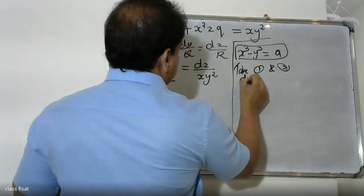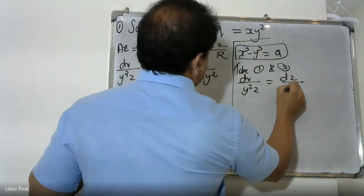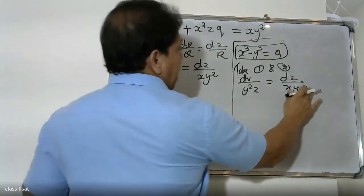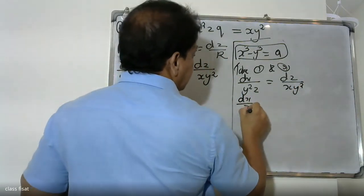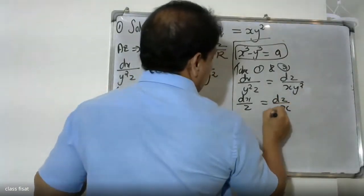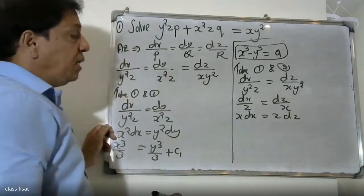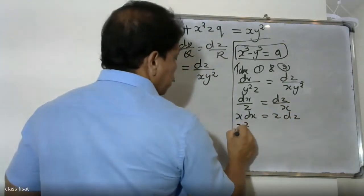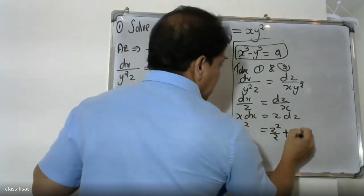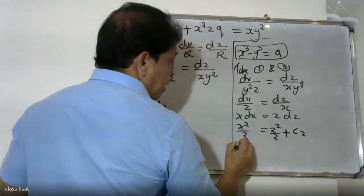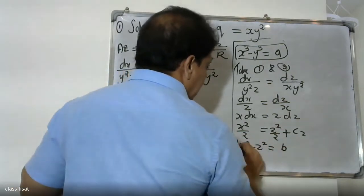For the second constant, taking the first and third ratios: dx divided by y-squared equals dz divided by x y-squared. The y-squared cancels, giving dx by z equals dz by x. Cross-multiplying: x dx equals z dz. Integrating: x-squared by 2 equals z-squared by 2 plus C2, so x-squared minus z-squared equals 2C2.